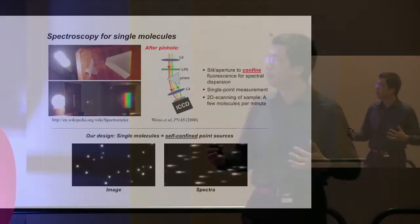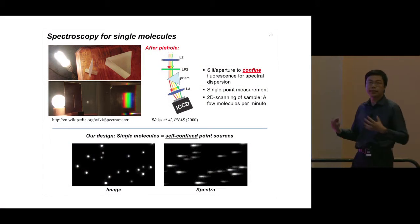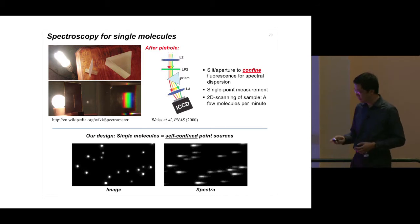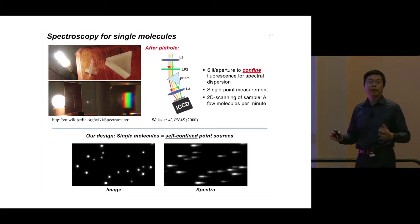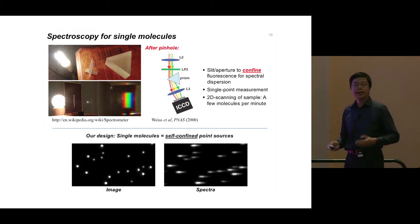This method works, but it's a single-point measurement. To generate an image you need two-dimensional scanning of the sample, which is very slow — you can only collect a few molecules per minute. We looked at this from a different angle and found that each single molecule is already a self-confined point source, so there's no need to add an additional pinhole for confinement. Instead, we just disperse everything from all single molecules directly into a spectrum in the wide field, achieving much higher throughput.